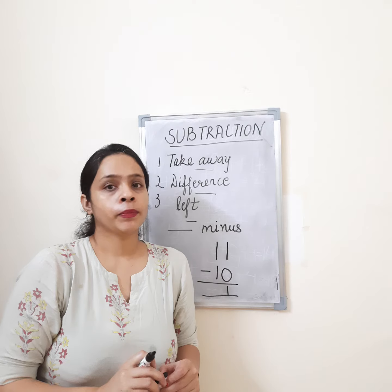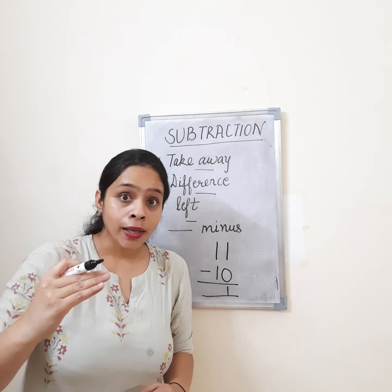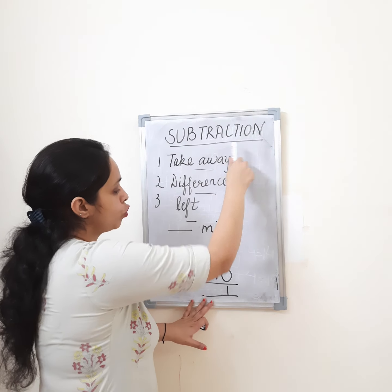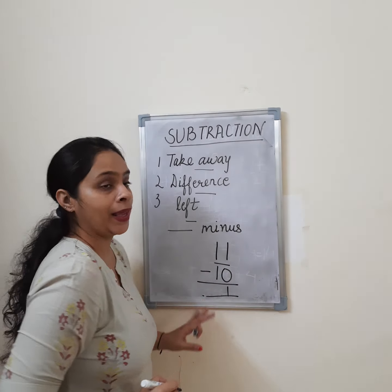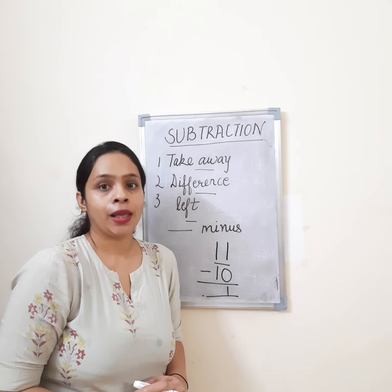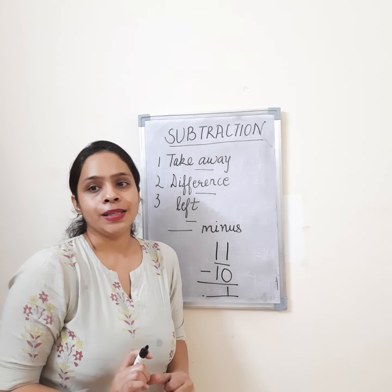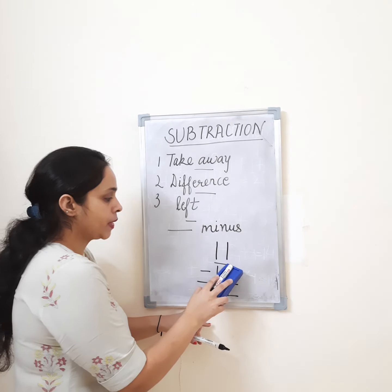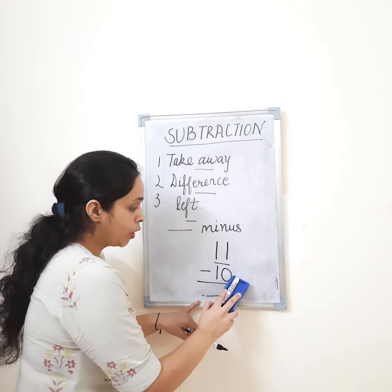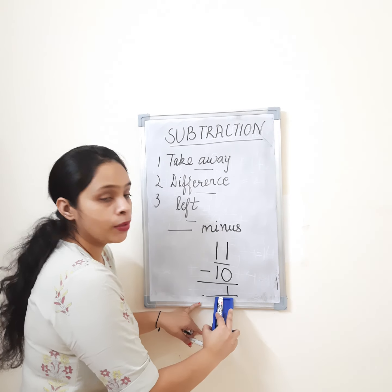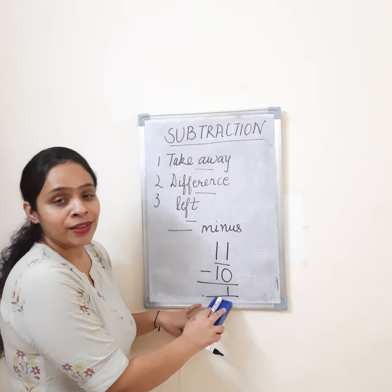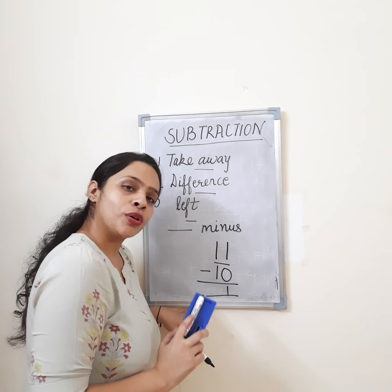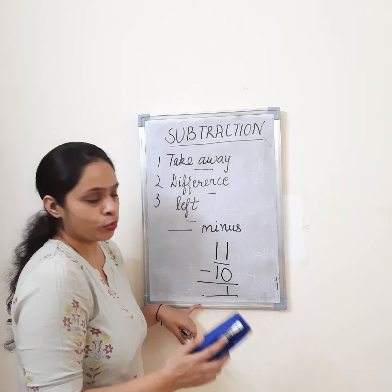Addition means numbers will increase, but subtraction means the number decreases. Here, first ma'am had 11, then 10 were taken, and it became even less — 1 book left for my son. So this is about subtraction. Let's go ahead with subtraction and explore some more cases.